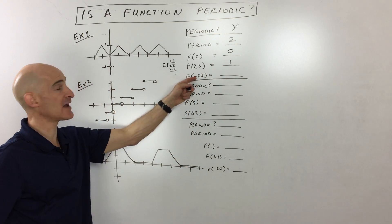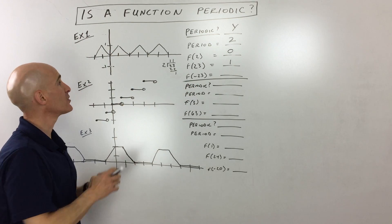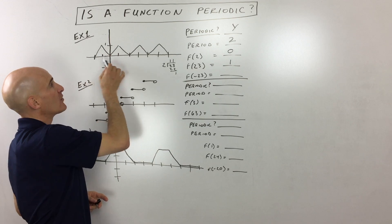Now, the last one, f of negative 23, we're going to the left, to the negative direction, 23 units. Again, same pattern, up and down, up and down,